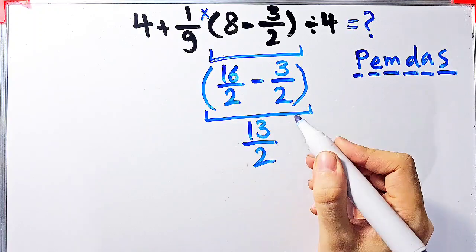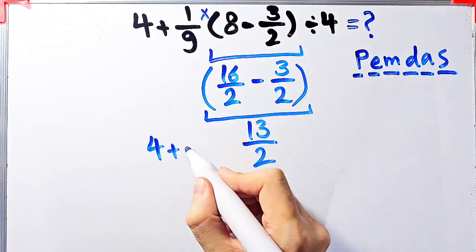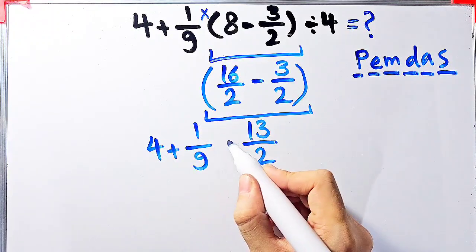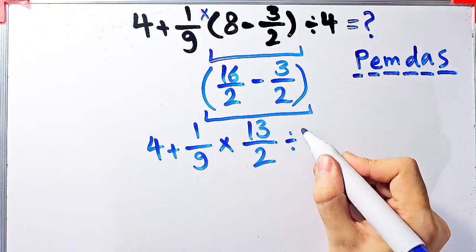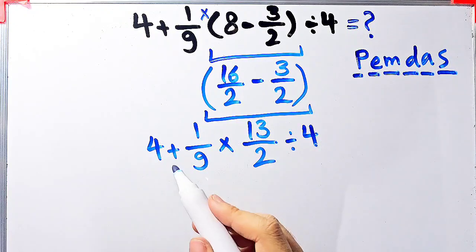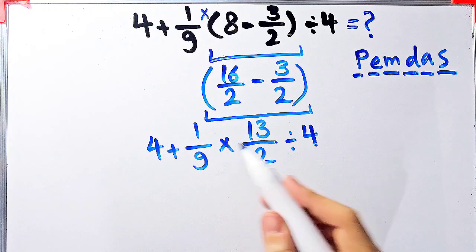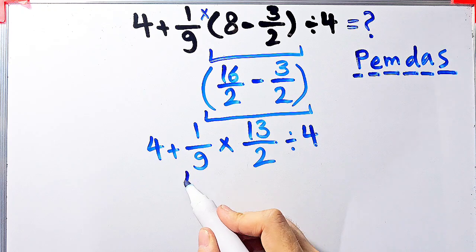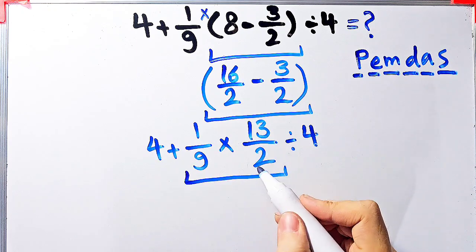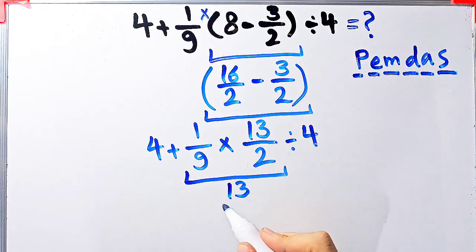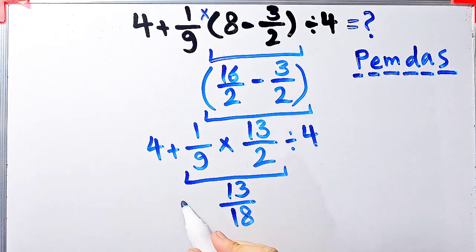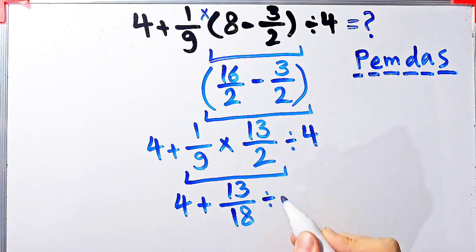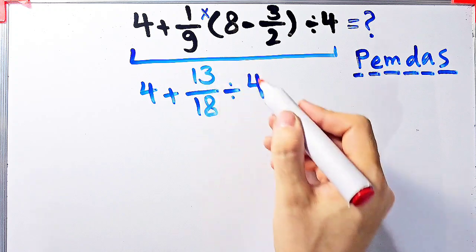Now the question is 4 plus 1 over 9, then times 13 over 2, then divided by 4. Now we have addition, multiplication, and division. First, we simplify the multiplication. 1 over 9 times 13 over 2 equals 13 over 18. Now we have 4 plus 13 over 18, then divided by 4. Now we have addition and division. First, we simplify this division because division has higher priority than addition.